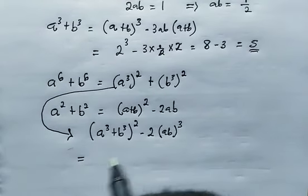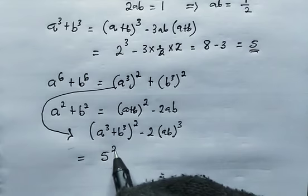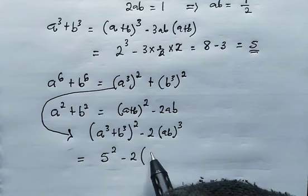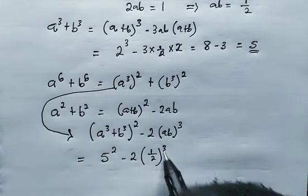So from here, this equals a cubed plus b cubed is 5, right? So we have 5 squared minus 2 into bracket here. ab equals 1 over 2, then we cube it.